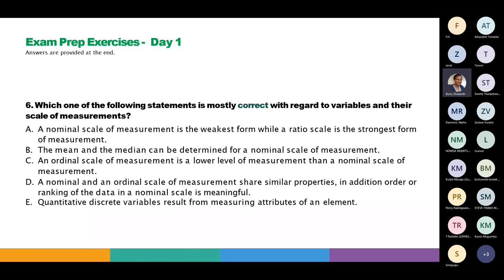You can calculate the frequency distribution for both nominal and ordinal because you can count how many people responded in each category. In nominal, you cannot calculate the median, but in ordinal you can — for example, with low, medium, high, the medium would be the median. You cannot add or subtract for either — that is the only thing they share, together with the frequency distribution. You cannot calculate the mean or standard deviation for nominal and ordinal since these are categorical data, and you cannot calculate ratios from the categories themselves.